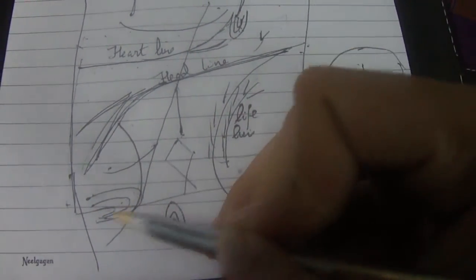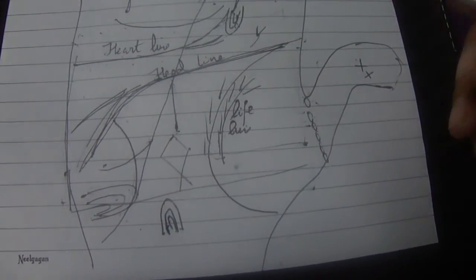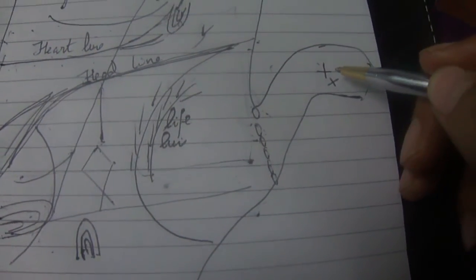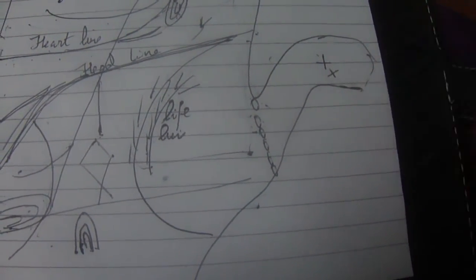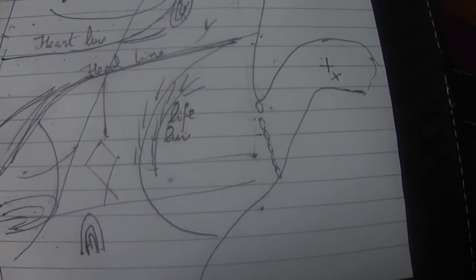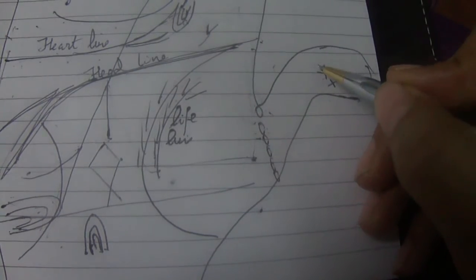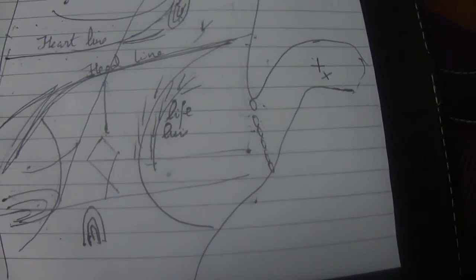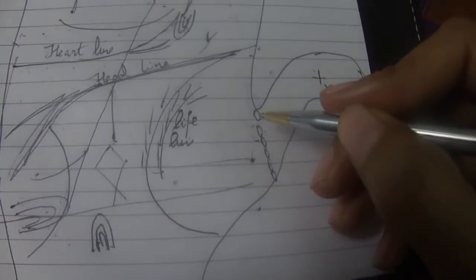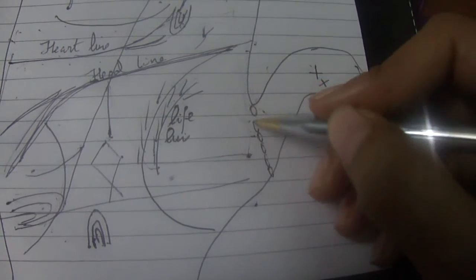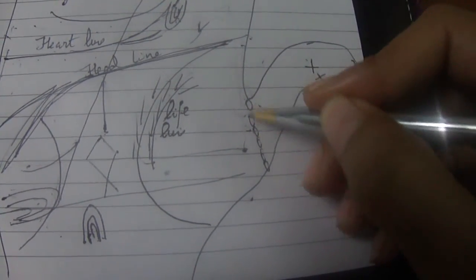Another point is that whenever you have the plus or the cross symbol on the thumb, it's not considered very good. It can indicate some conflicts in the marriage. It's not a very good sign to see a plus or cross symbol anywhere on the thumb. Also, whenever the family ring is very dark, it's not considered very good.